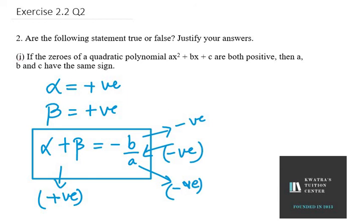So if we have positive on both sides, then only we can say that this condition is satisfied, or we can say that this is not possible that A, B and C all have same signs. This is not possible in this case. So this will be false here.